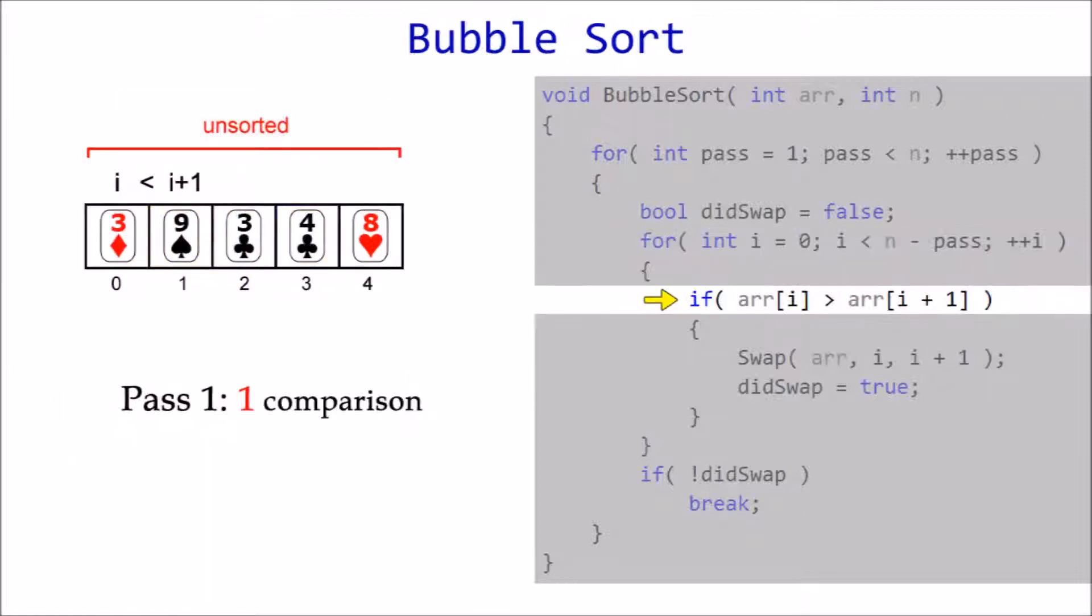For the first comparison, three is not greater than nine, so current index is simply incremented to one. This time, nine is greater than three, so they are swapped. The boolean variable is also updated to reflect this action.